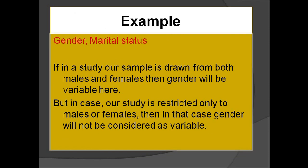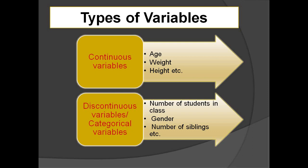A few more examples: gender and marital status. If our study draws a sample from both males and females, then gender will be a variable. But if we restrict our study to only males or only females, then gender will not be considered a variable.